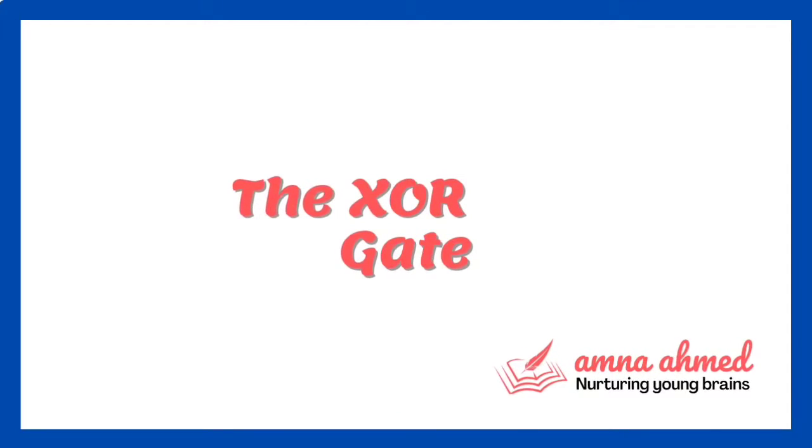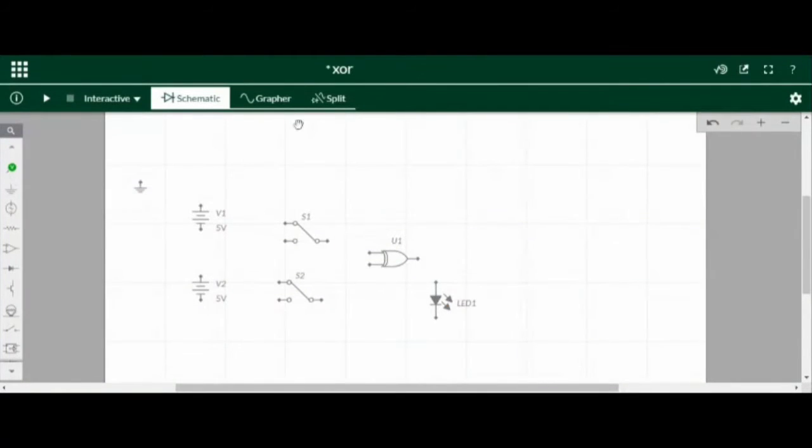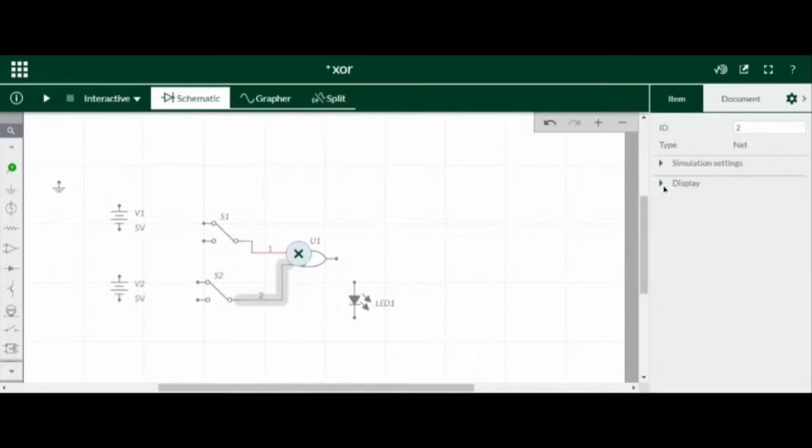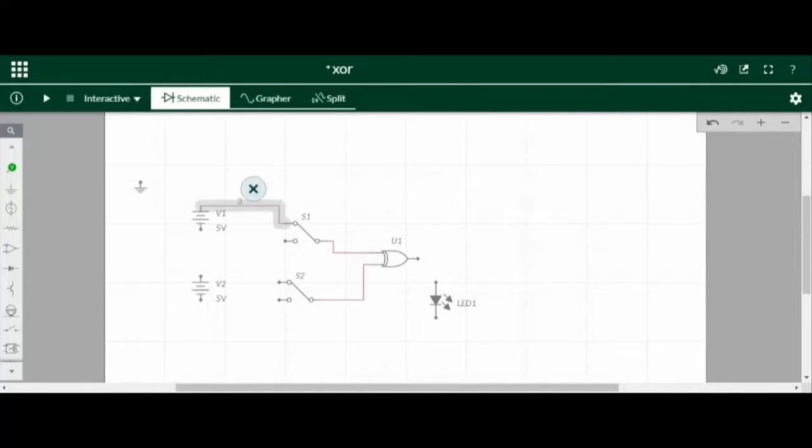Bismillahirrahmanirrahim, the XOR gate tutorial. I have placed all the components: this is an XOR gate, two switches, and two voltage sources. Let's start making connections like this. Two inputs of the XOR gate will connect to two switches. The switch is SPDT and it has two terminals as an input and one terminal as an output.